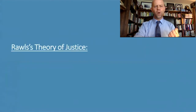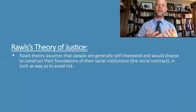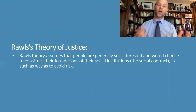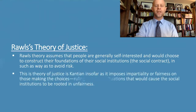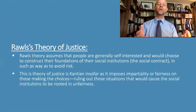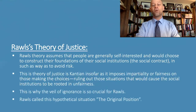According to Rawls, everybody was generally self-interested, and we would choose to construct an ideal society and its social institutions in a way in which we would avoid risk, because we're self-interested and risk-averse. Rawls's theory was really a Kantian theory insofar as it was supposed to impose impartiality or fairness on decision-making in this hypothetical situation, and to rule out those situations that would cause social institutions to be rooted in unfairness.